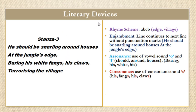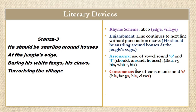Literary devices in stanza 3. The rhyming scheme is A-B-C-B: houses (A), edge (B), claws (C), village (B). Enjambment: the line continues to the next line without punctuation — 'He should be snarling around houses at the jungle's edge' — there is no comma, full stop, or question mark after this line. Assonance: use of vowel sounds O and I — 'should,' 'around,' 'houses,' 'baring,' 'his,' 'white.' Consonance: use of consonant sound S — 'his,' 'fangs,' 'his,' 'claws.'